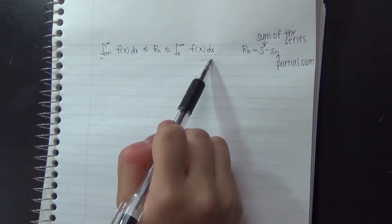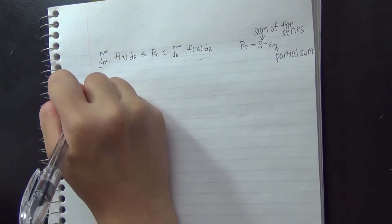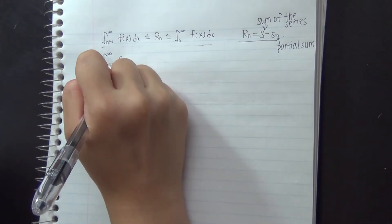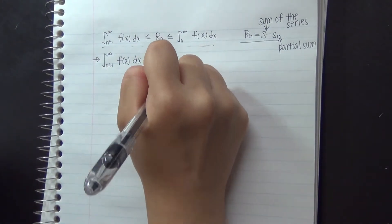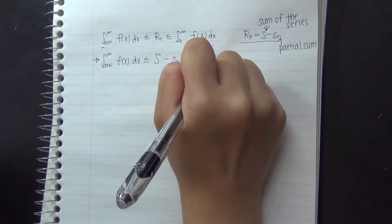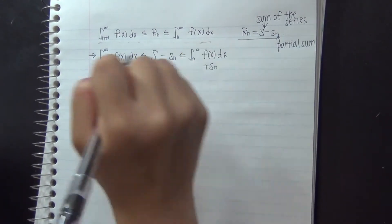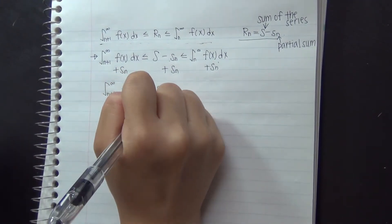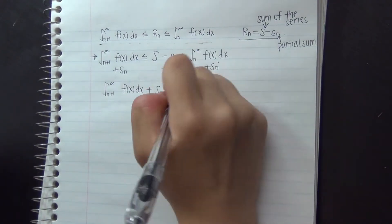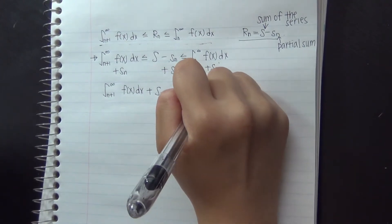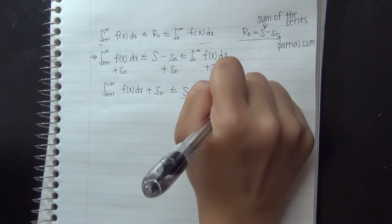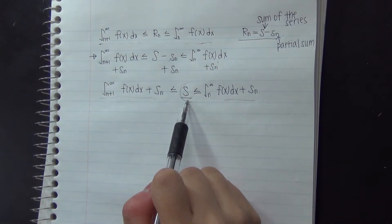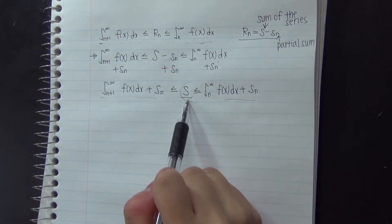From the remainder estimate equation, we can derive a bounding equation using the fact that Rn equals the total sum minus the partial sum. Plugging that in, the equation becomes s minus Sn is bounded by the integral estimates. Adding Sn to all terms, we get: S_n + integral from n+1 to infinity ≤ s ≤ S_n + integral from n to infinity. This equation gives a lower bound and an upper bound for s, providing a more accurate approximation to the series sum than the partial sum Sn alone.